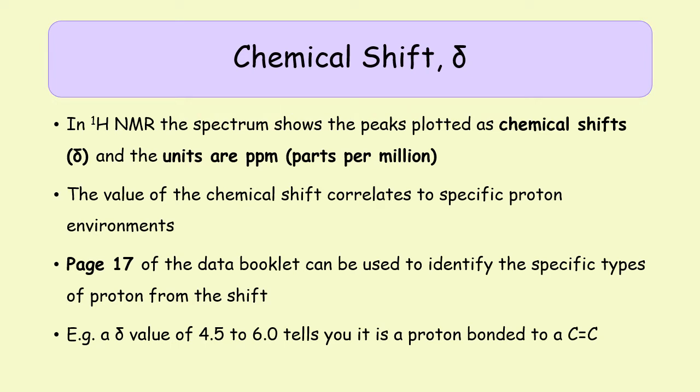For example, from page 17, if you find that the chemical shift from your spectrum is between 4.5 and 6, that tells you the signal is from a proton found attached to a carbon-carbon double bond. The individual protons are always shown in bold on the left-hand side of the image on page 17.